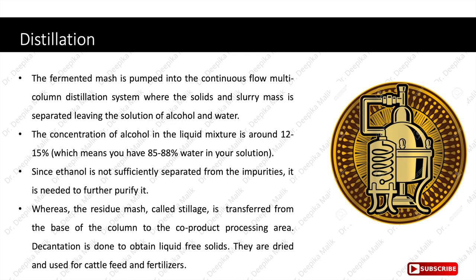The residue mash, called stillage, is transferred from the base of the column to the co-product processing area. Decantation is done to obtain liquid-free solids, which are dried and used for cattle feed and fertilizers. So distillation separates the liquid broth from the solid biomass. The liquid obtained contains only 12 to 15% ethanol, which is very low. To concentrate it further, rectification is used as the next step.